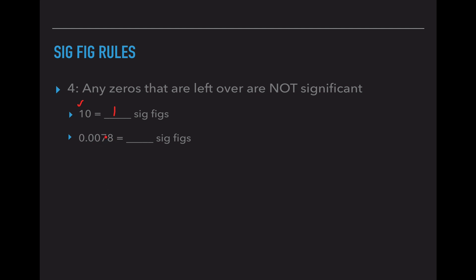For 0.0078: the 7 and the 8 are automatically significant by rule one. For rule two, these two zeros are to the right of the decimal but they are not to the right of a non-zero number, so they are not significant. For rule three, there is no other non-zero number to the left, so none of these zeros are significant by the sandwich rule. So we only have two sig figs for that example.